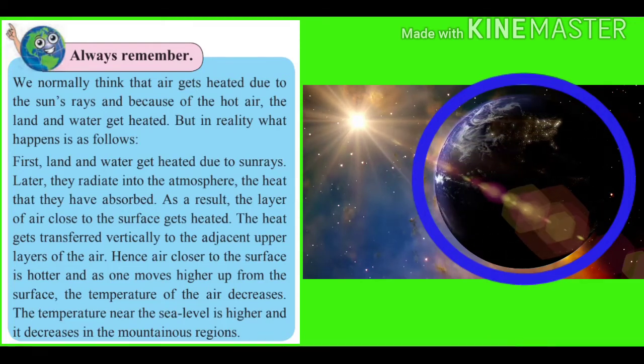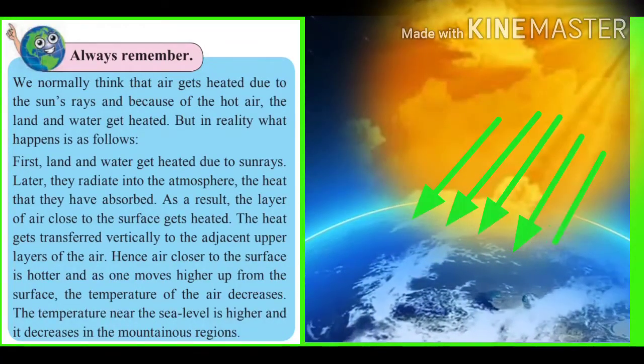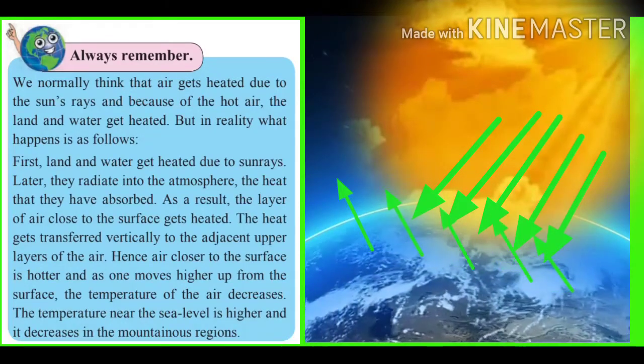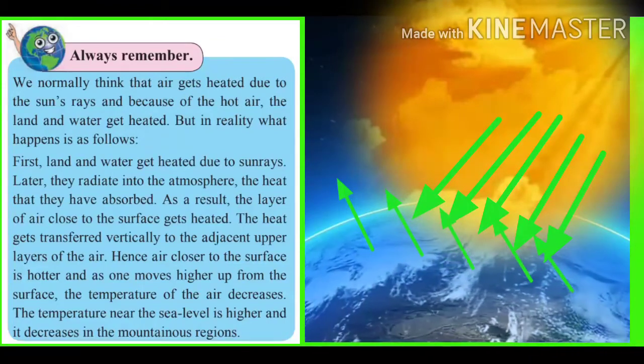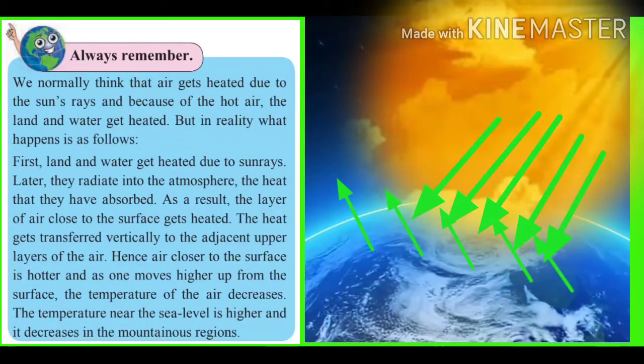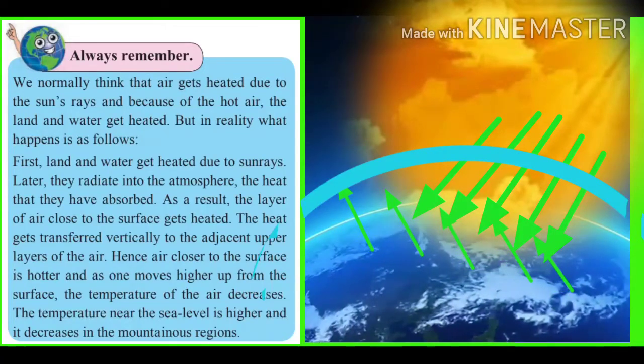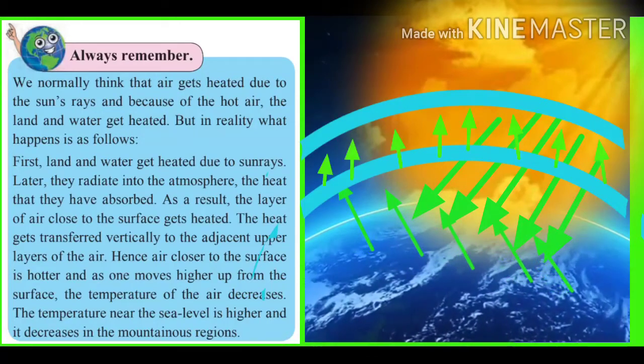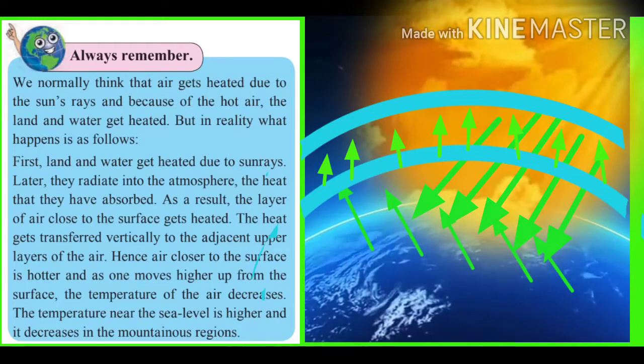But in reality, what happens is as follows: first, land and water get heated due to sun rays. Later, they radiate into the atmosphere the heat that they have absorbed. As a result, the layer of the air close to the surface gets heated. The heat gets transferred vertically to the adjacent upper layers of the air.